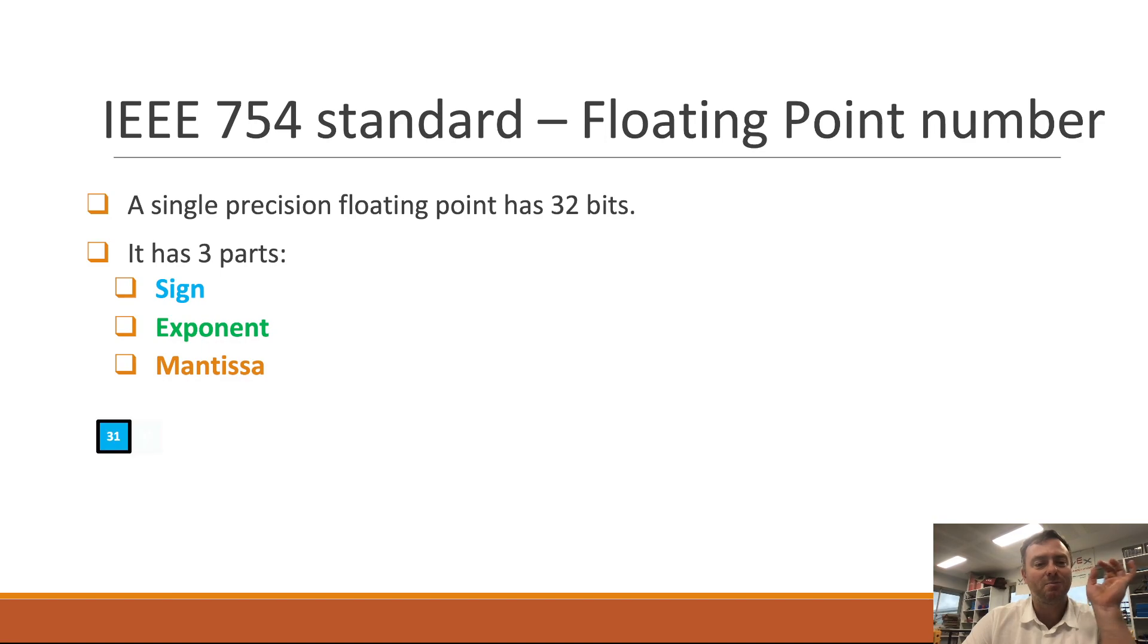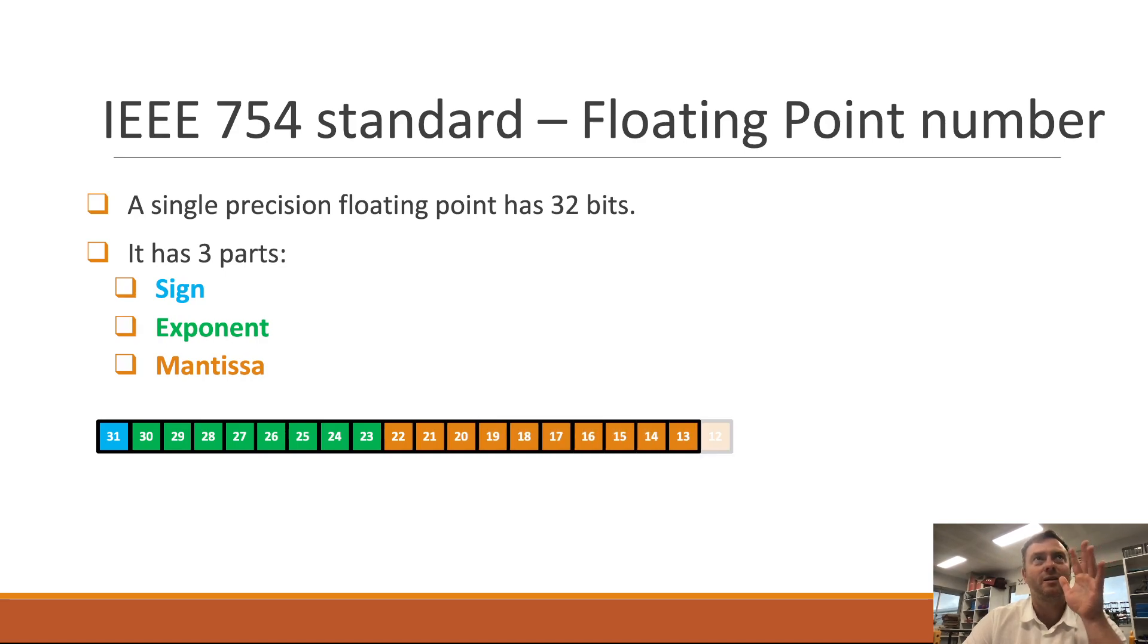So the sign is the first bit always. So that's the 31st bit. The next eight bits represents the power. So what happens is you have 256 different options there, which is a lot.